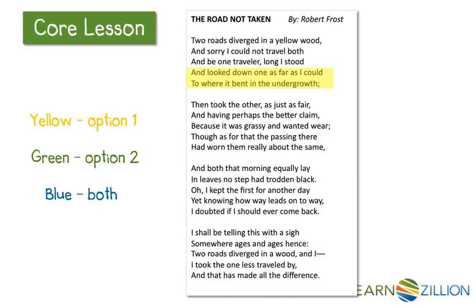Then, lines six to eight tell us about the second road: 'Took the other just as fair and having perhaps the better claim because it was grassy and wanted wear.' Let's highlight this image in green. Finally, at the end of the poem, the speaker also talks about image number two, saying in lines 19 to 20, 'I took the one less traveled by and that has made all the difference.' Let's highlight that in green as well.